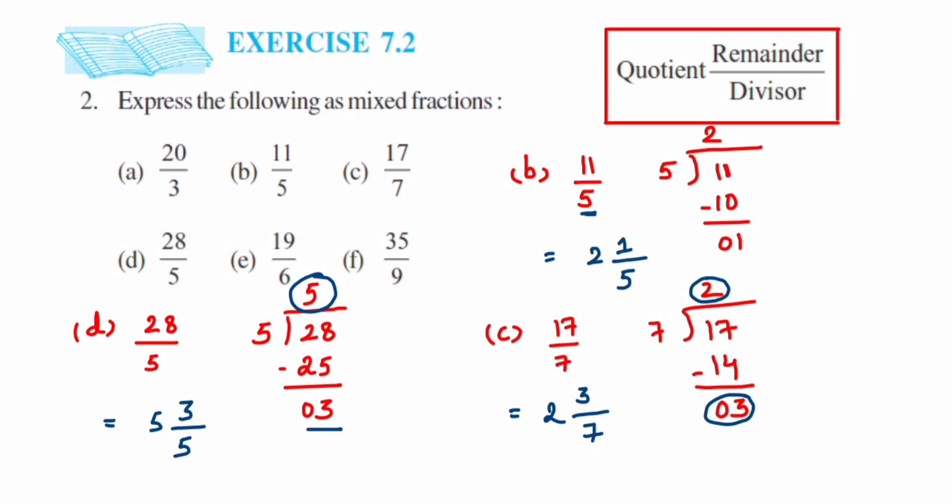Next, problem E. This is 19 upon 6. Divide 19 by 6. 6 times 3 is 18, so the remainder will be 1. This will be equal to: 6 is the denominator, the quotient is 3, and the remainder is 1. So it's 3 and 1/6.